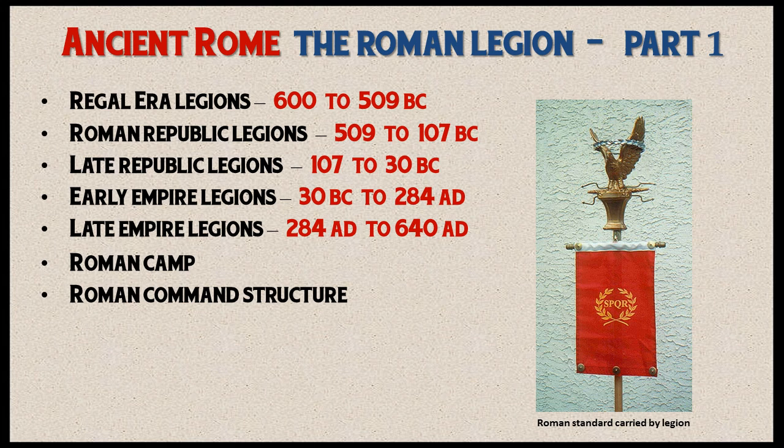In this video, we'll be covering the Regal Era Legions, which lasted approximately from 600 B.C. to 509 B.C. 509 B.C. represents the start of the Roman Republic, and the early to mid-Roman Republican Legions lasted from approximately 509 B.C. to 107 B.C. We will cover these two epochs in this video. In the next video, we will cover the late Republican Legions along with the Imperial Legions, and in the third video we'll talk about the Roman Camp and Command Structure.